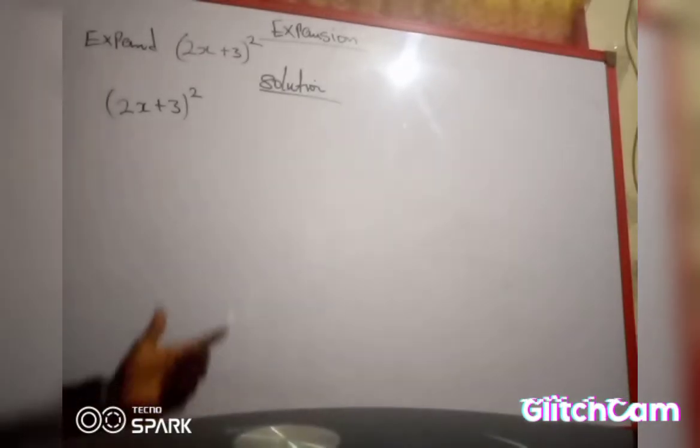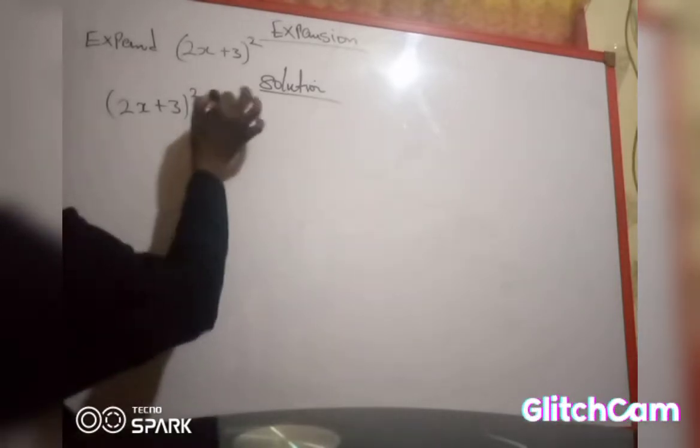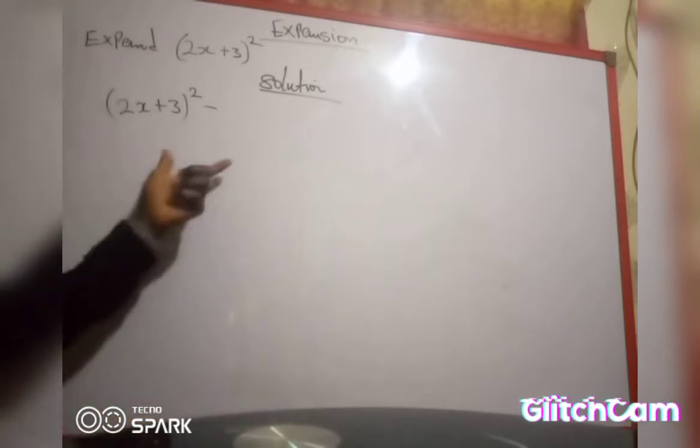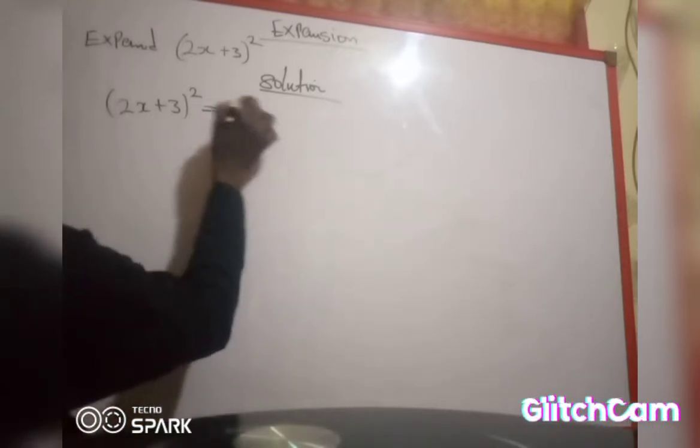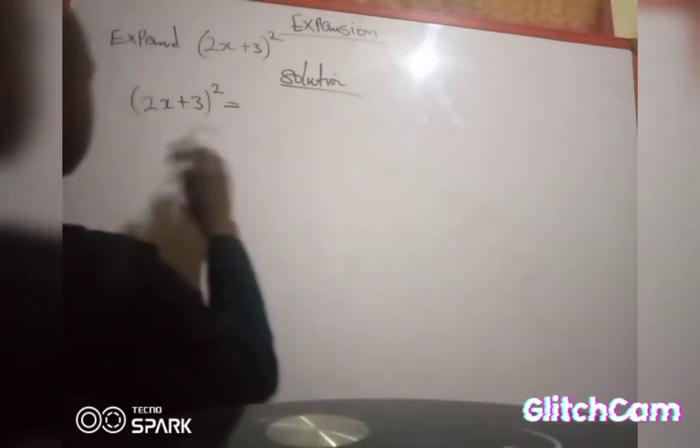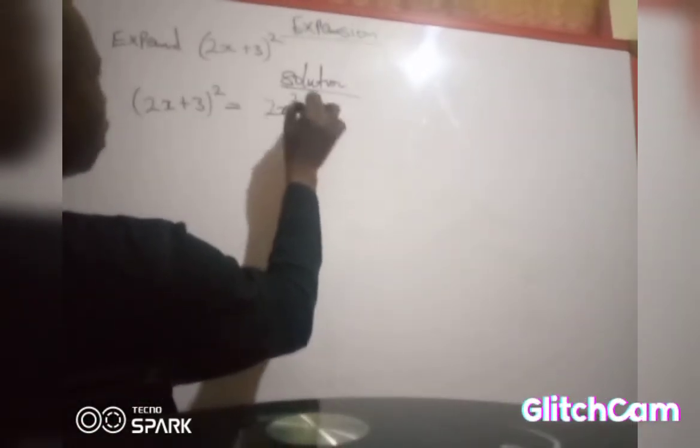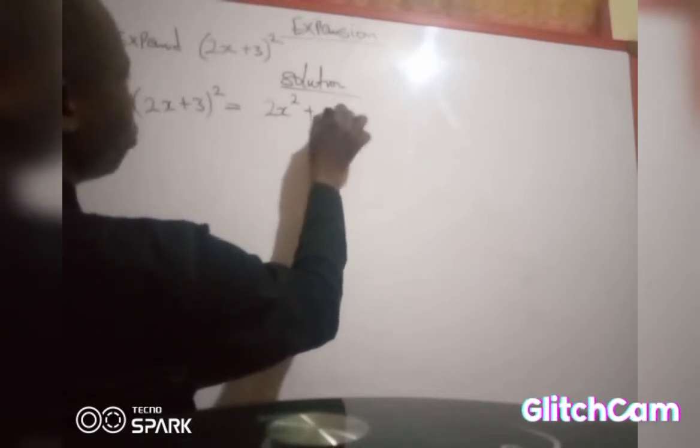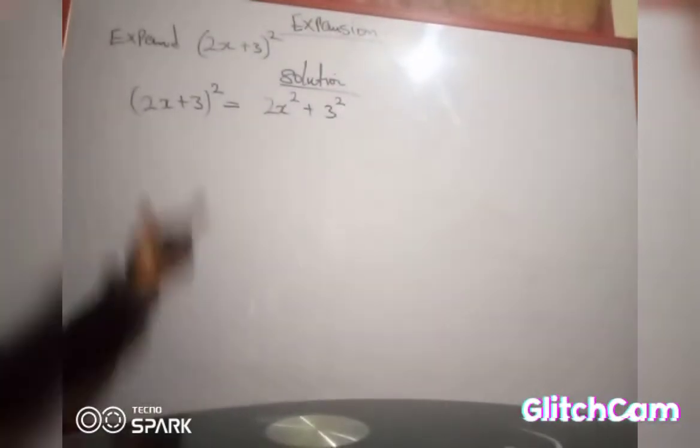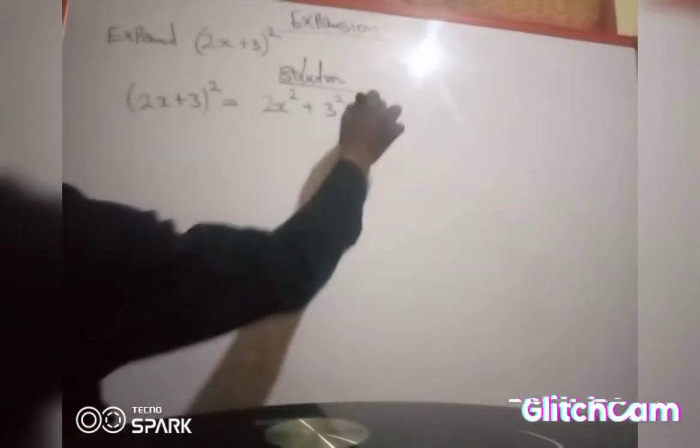We students in this expansion, we students normally used to make mistakes most especially in objectives. So students when they give this question and they provide the option, some of the students they used to take this option as 2s squared plus 3 squared. So if they provide options, they used to take this one which is not correct.